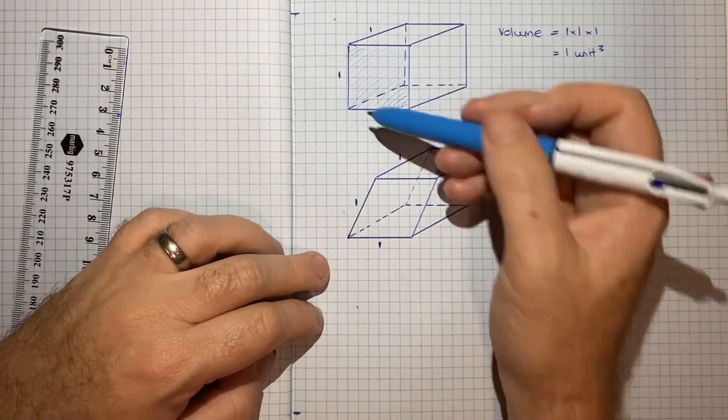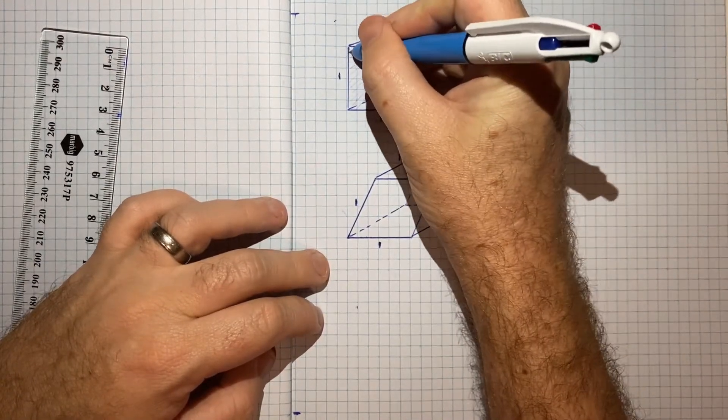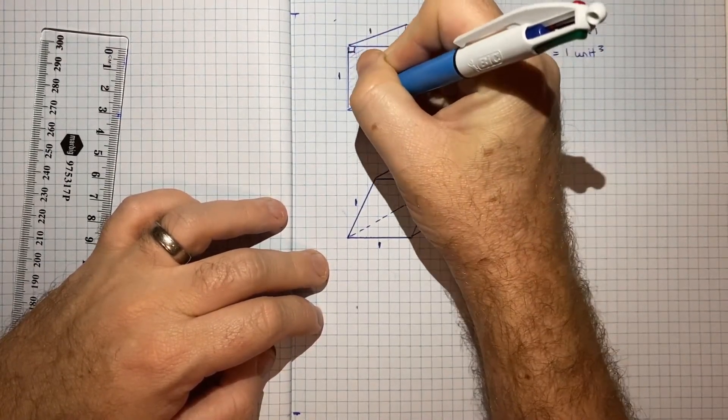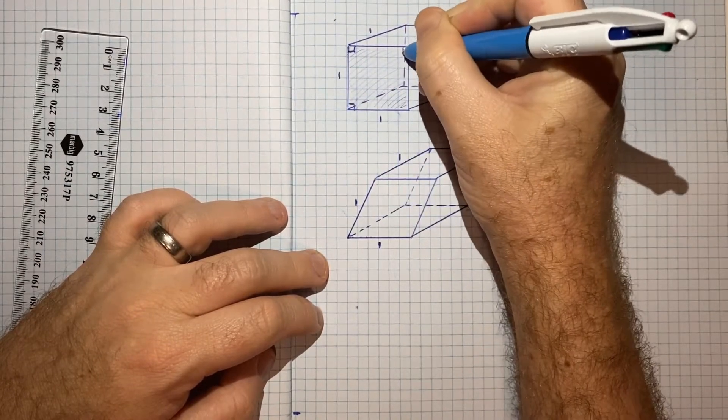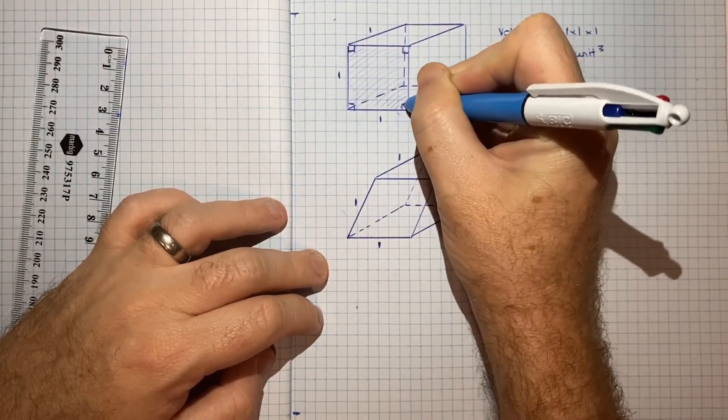So instead of the face being a square, so instead of this being 90 degree angles here, all the way through, we've got different angles.